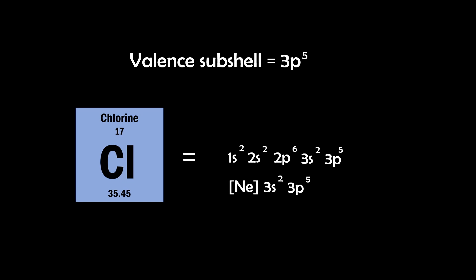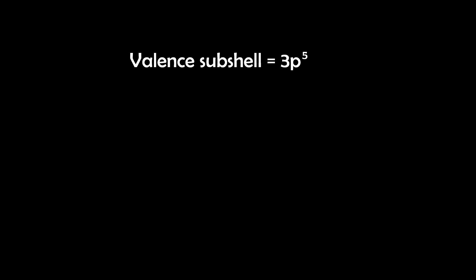Next, we determine the quantum numbers of the valence subshell, which we know is 3p5. So we already know the principal quantum number is 3. We know the angular momentum number is p, or 1.